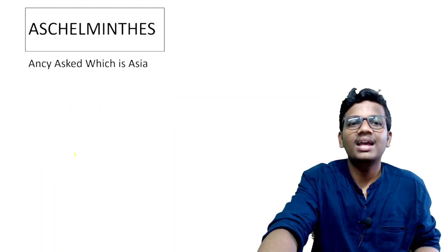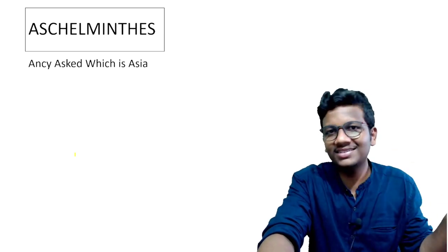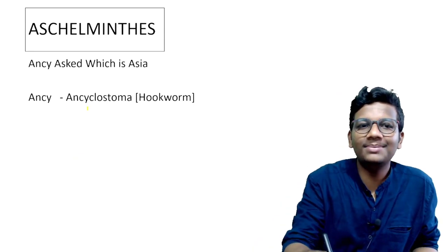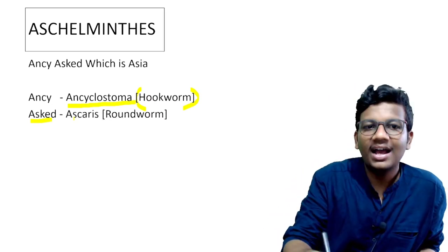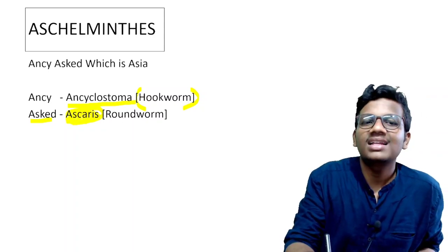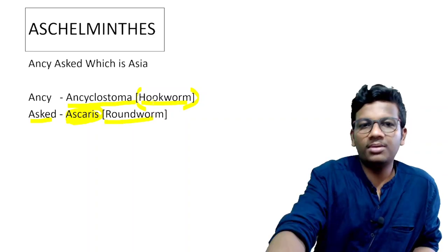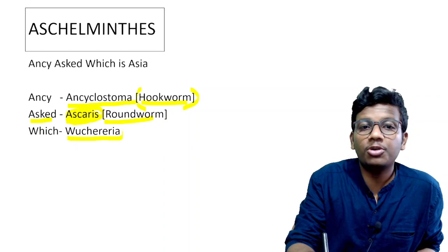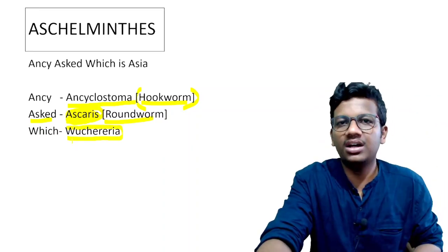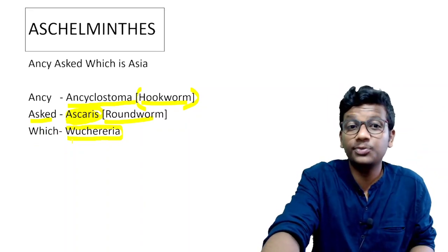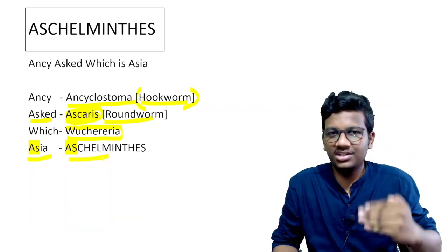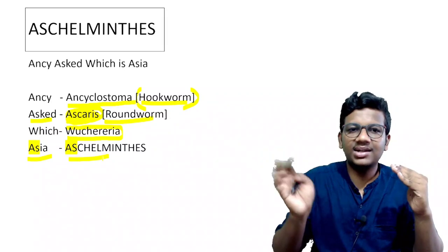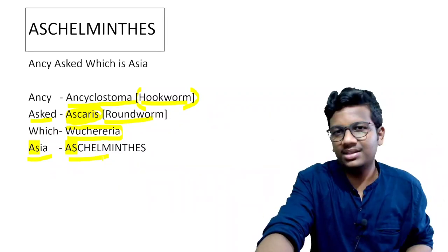The next phylum is Aschelminthes. The mnemonic is: 'Angie asked which is Asia.' This is my second most favorite mnemonic. Angie means Ancylostoma, also called hookworm. Asked means Ascaris, also called roundworm. Which means Wuchereria — Wuchereria causes elephantiasis. Finally, AS signifies Aschelminthes. So: Ancylostoma (hookworm), Ascaris (roundworm), Wuchereria (elephantiasis) — all under Aschelminthes.